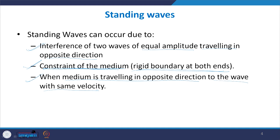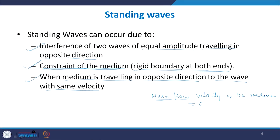In this course, at the very beginning we assumed that the mean flow velocity of the medium is zero — the medium is not moving, and then suddenly a disturbance is created and particles start oscillating. So we will not study the third case here; we will study the first two cases.